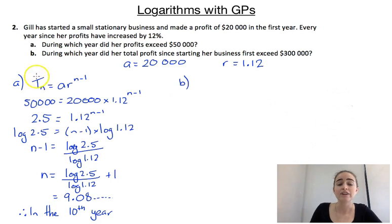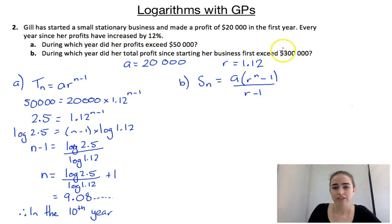Part B, instead of looking at a particular term, we're looking at the sum now. So sum to n terms, going to be a times (r^n - 1) over (r - 1). I just realized that I actually meant for this question not to be 300,000 but be 100,000. So let's just change that and go from there. So now we can substitute in all our numbers into this formula.